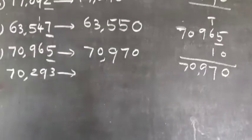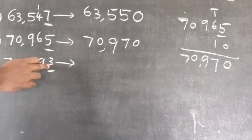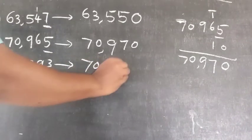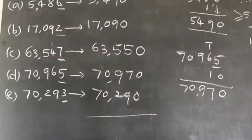Last question: 70,293. The last digit is three, which is less than five, so the last digit becomes zero with no other change. The answer is 70,290. Okay, we're done. Thank you.